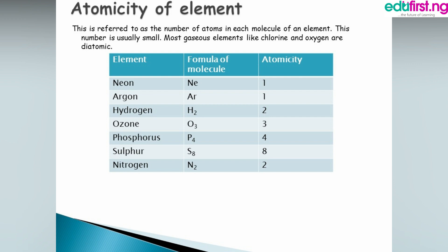Here are some examples: Neon (Ne) has an atomicity of one; Argon (Ar) has an atomicity of one. Hydrogen (H2) is one molecule with two atoms, so atomicity is two. In chemistry, the number of molecules is written in front of the symbol, while the number of atoms is written as a subscript. Ozone (O3) has an atomicity of three; Phosphorus (P4) has an atomicity of four; Sulfur (S8) has an atomicity of eight; and Nitrogen gas (N2) has an atomicity of two.